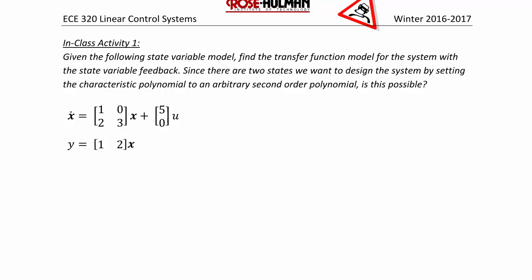Since we have state variable feedback, we know that u equals negative kx plus gpf times r. So a tilde will equal a minus bk, or [1 0; 2 3] minus [5; 0] times [k1, k2].